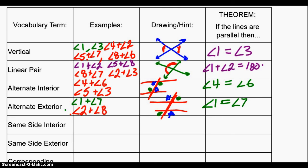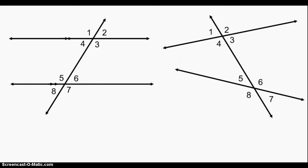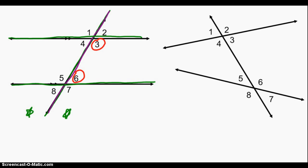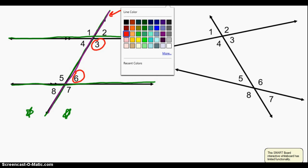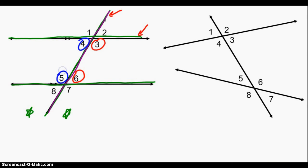What about same side interior or same side exterior? Well, same side interior and exterior are kind of like alternate interior and alternate exterior, but instead of being alternate, the angles are on the same side. Same side interior means the two angles are both on the same side of the transversal and on the interior of the two parallel lines. For example, three and six are same side interior — on the same side of the purple transversal and on the interior of the two green lines. Four and five are also same side interior.